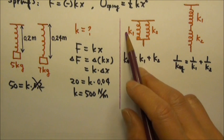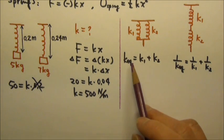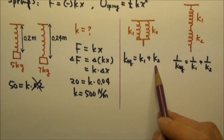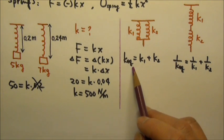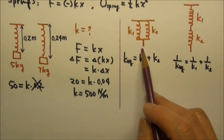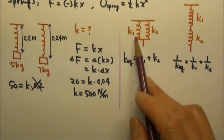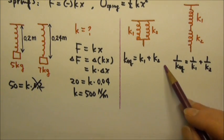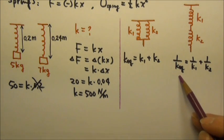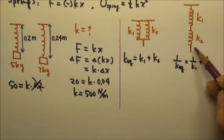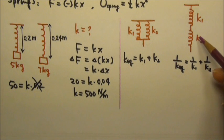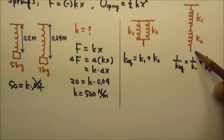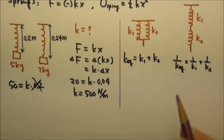When two springs are combined in parallel, the equivalent force constant is k₁ + k₂. We get a larger force constant because stretching the combination by the same amount requires more force than an individual spring. If the springs are in series, the equivalent force constant is smaller, because pulling with the same force causes the combination to stretch more than an individual spring.